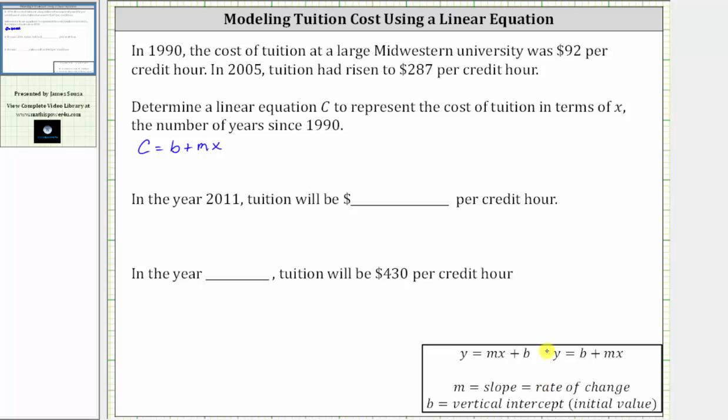Going back to the given information, since x is the number of years since 1990, and in 1990 the tuition was $92 per credit hour, we can represent this as the ordered pair (0, 92). We use zero for x since x equals zero represents the year 1990.